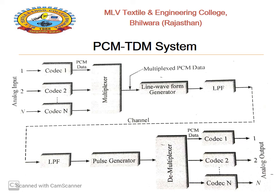At the receiver section, the input passes through a low-pass filter, then a pulse generator, and then a demultiplexer — which is the reciprocal of the multiplexer, with a single input and multiple outputs. The demultiplexer separates codec 1, codec 2, up to codec N analog signals. This is the working of the PCM-TDM system.